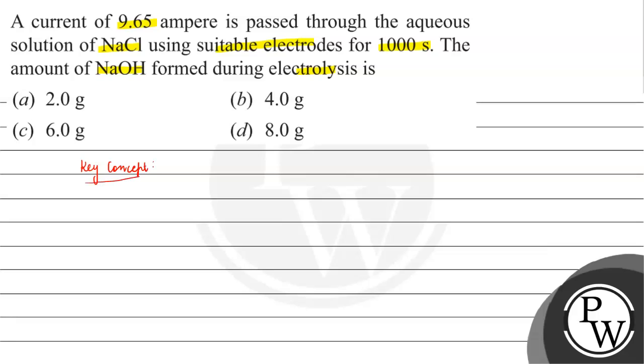In this question, Faraday's law of electrolysis will be used in which mass deposited is directly proportional to the current and time. So mass is equal to ZIT. Here the Z constant is equal to equivalent mass upon 1 Faraday.